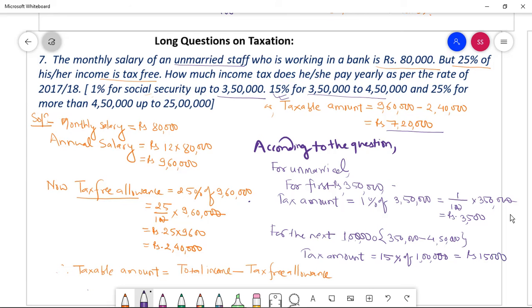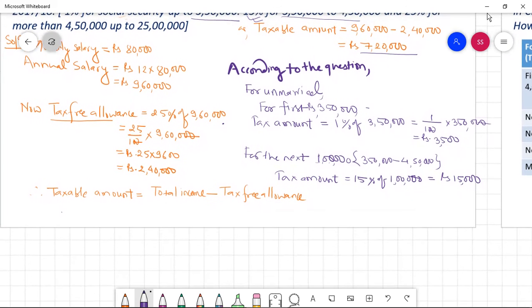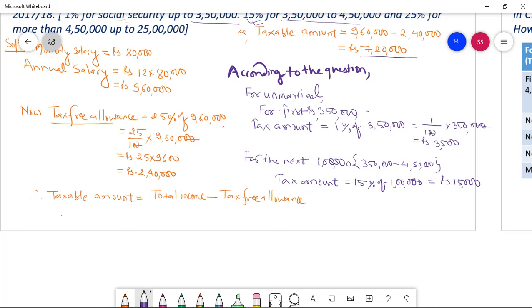Now the rest of the amount, what is the rest of the amount dear students? Remaining amount, because it doesn't exceed more than 2.25 lakhs. So seven lakhs twenty thousand minus first three fifty lakhs minus one lakh equal to, tell me the amount.